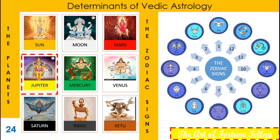The fifth planet is Mercury. Mercury is given the position of the prince among the hierarchy of planets. It is known for its youthfulness, wittiness, and intelligence. The sixth planet is Venus. Venus is the most important planet in this Kali Yuga, as it is responsible for all the luxuries and materialistic pleasures that everybody craves.